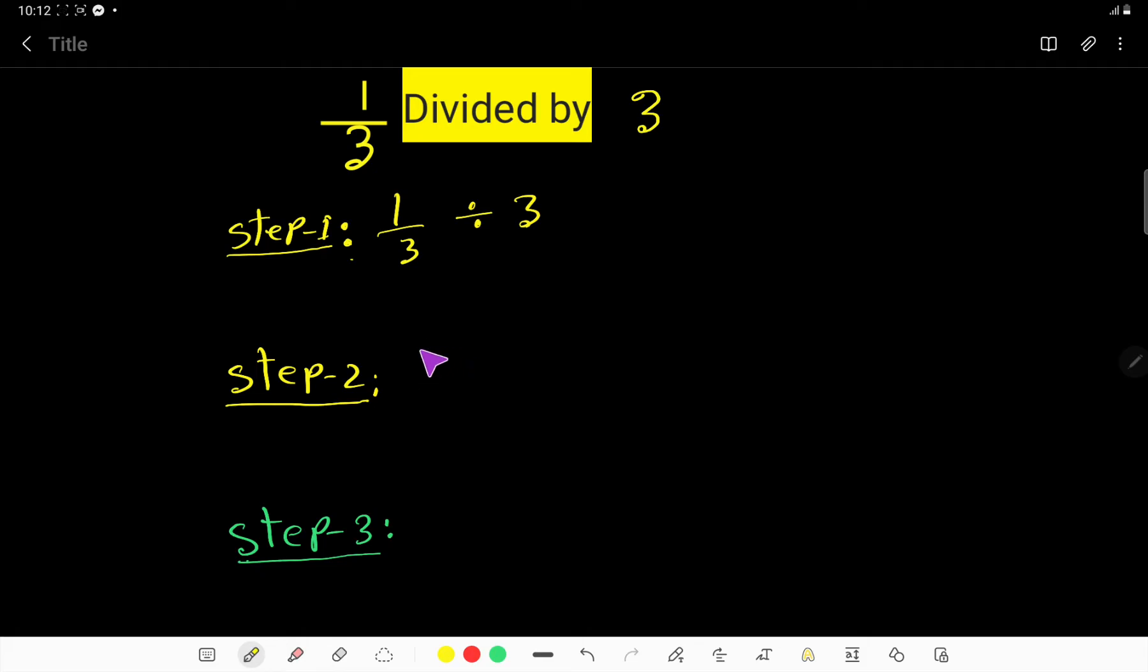In the second step, I will express this whole number as a fraction. We can express any whole number as a fraction by taking 1 as the denominator. Since this is a fraction, we need a fraction. 3 over 1 - the value of 3 and 3 over 1 is the same.